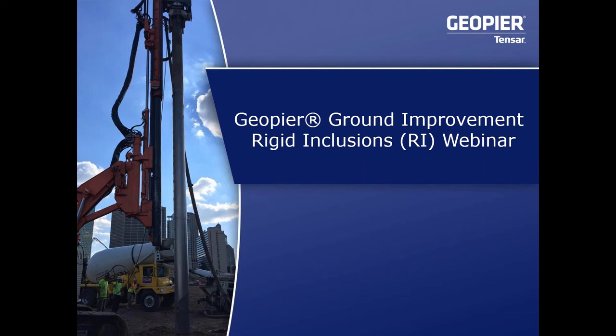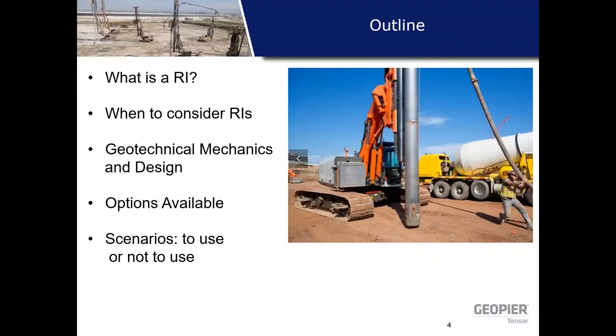I'll sometimes refer to rigid inclusions with the abbreviation RI on the slides so we don't tie them up with long phrases. We'll also use the phrase 'rammed aggregate piers' abbreviated as RAP. RAPs are our traditional ground improvement technologies that most people are familiar with. Just a brief outline: we'll cover what a rigid inclusion is, when to consider them, the geotechnical mechanics and design considerations, the options Geopier provides, and then a 'to use or not to use' exercise.